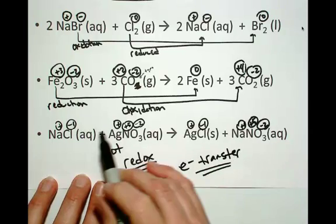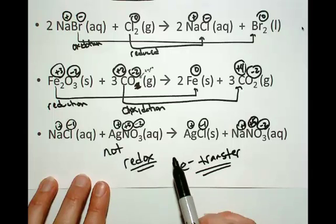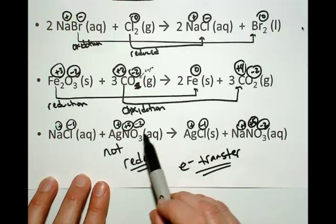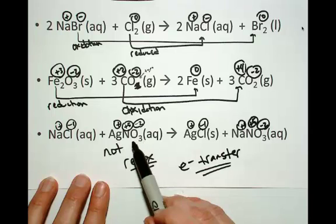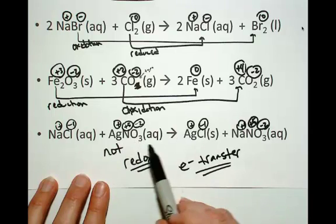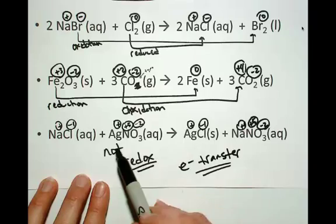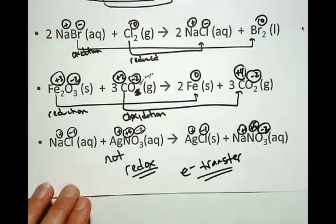In this case, it's just what we call a double replacement or switching of partners. There's no oxidation-reduction, and we end up with what we call a precipitation reaction. You don't always have oxidation-reduction going on.